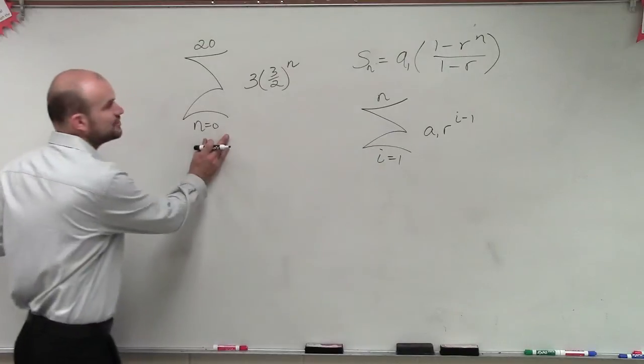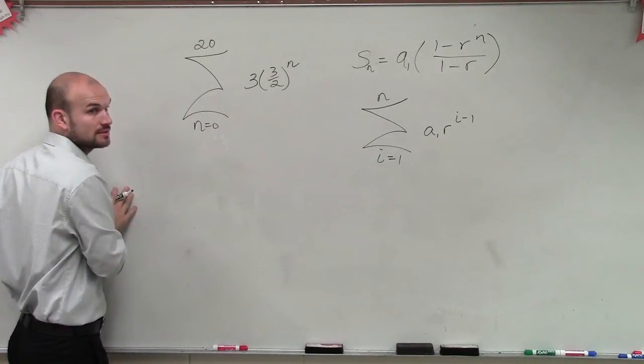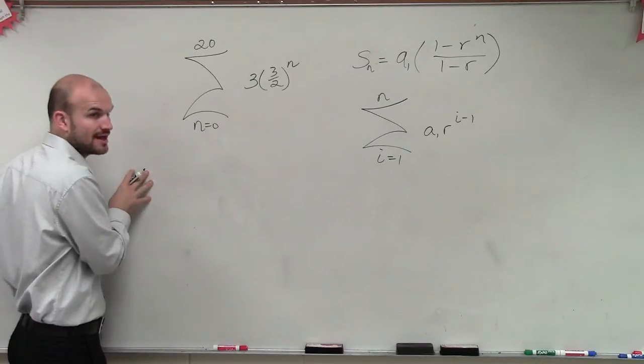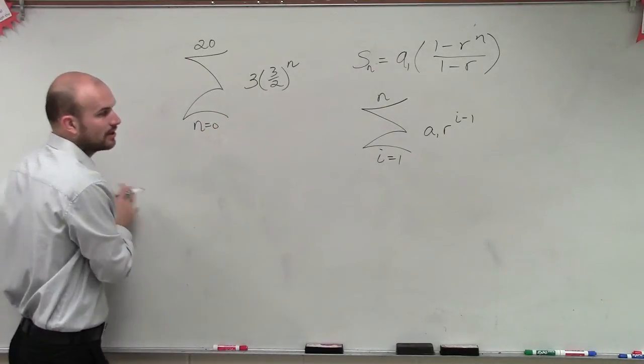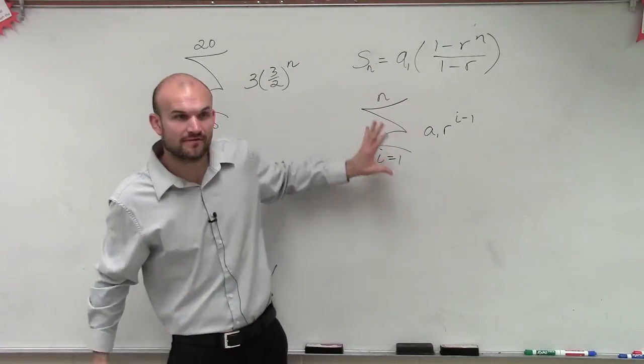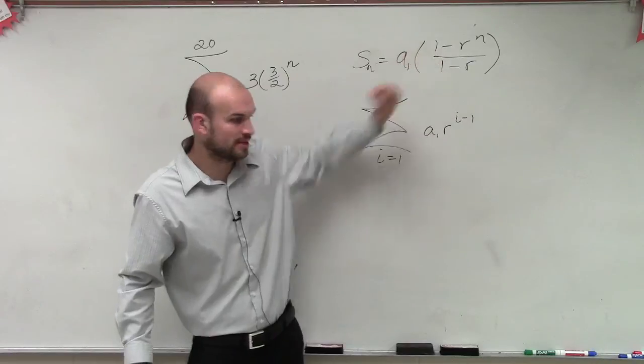So you can see we have an issue right here because we're not starting at 1, correct? Well, we can easily change that by affecting our rule. So once we know that we have this, we know we need to get it in this format to apply this formula.